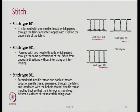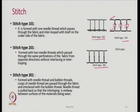Stitch type 201 has two different types of thread — formed with two needle threads which pass through the same perforations of the fabric from opposite directions without interlacing or interlooping. So here it is just simply going through, with no interlooping or interlacing.